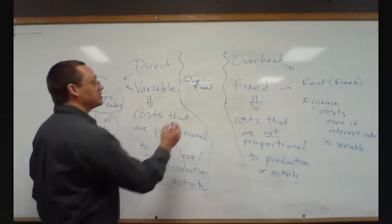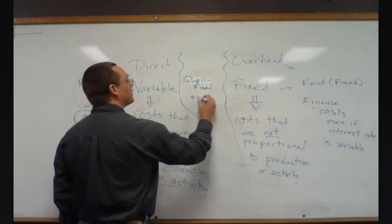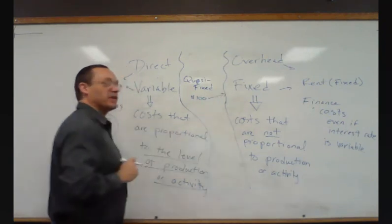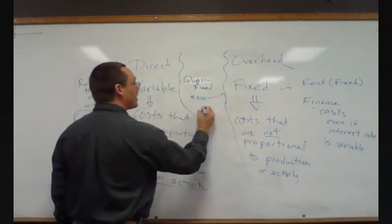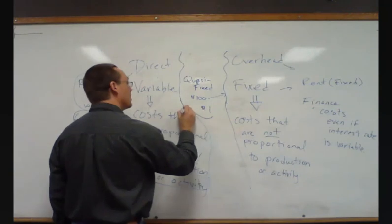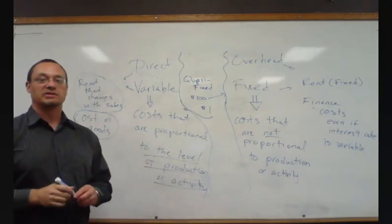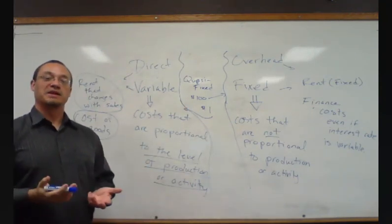Well, the $100 to have the line at all is a fixed cost. The $1 per call is part of your variable costs. So, that's how we break down that distinction.